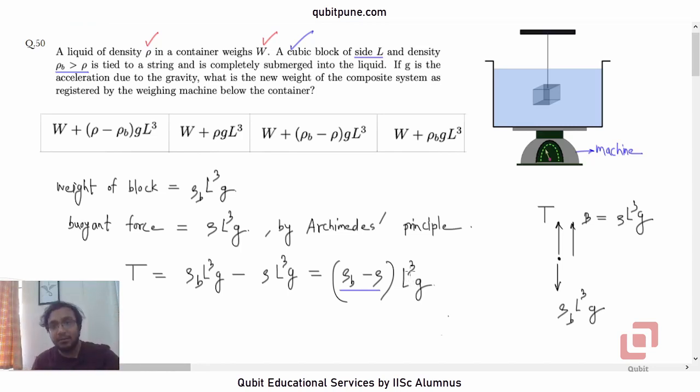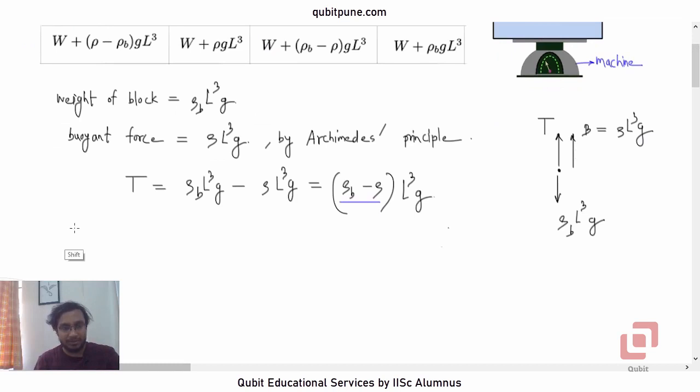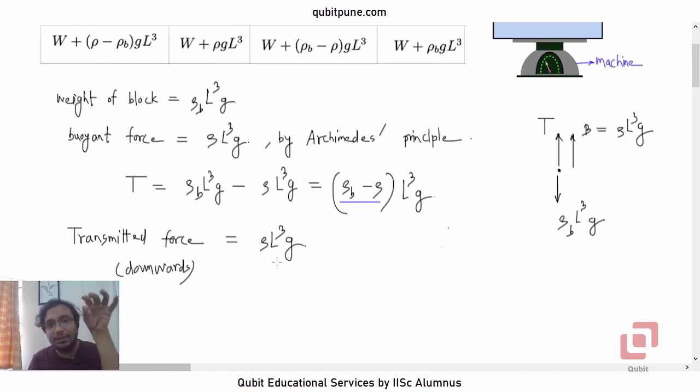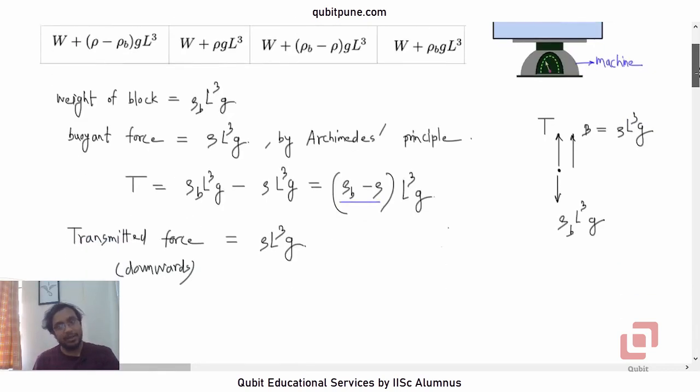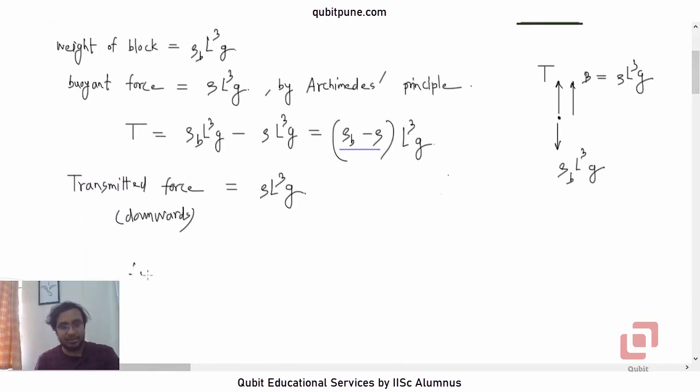So what is being transmitted downwards? The transmitted force downwards—it is directed downwards. How much will that be? That will be basically equal to ρL³g. So we can say that this is equivalent to adding liquid whose volume is equal to that of the cubical box. So this transmitted force.